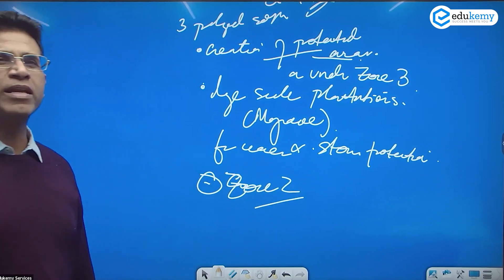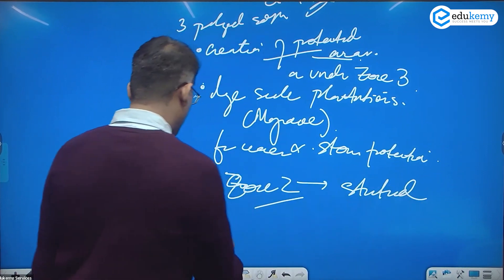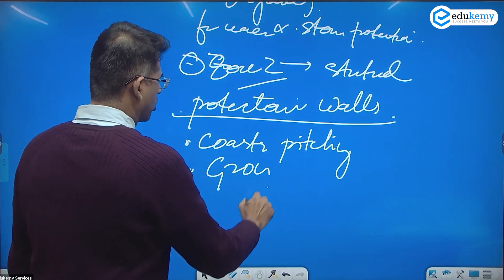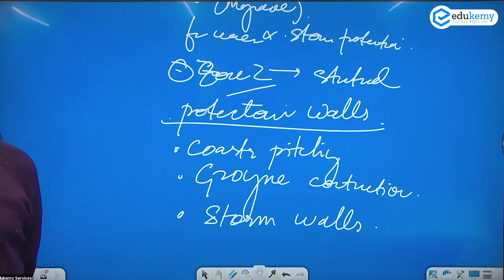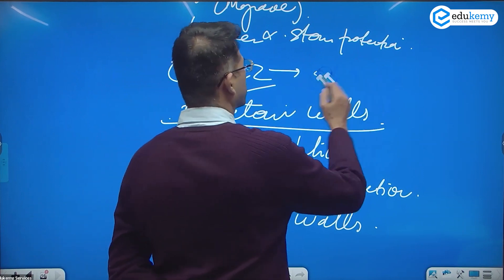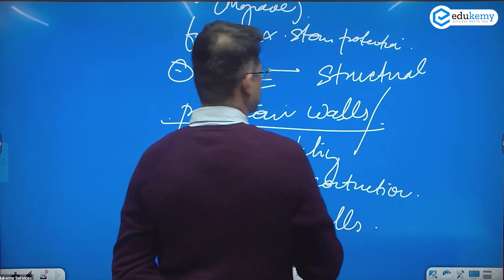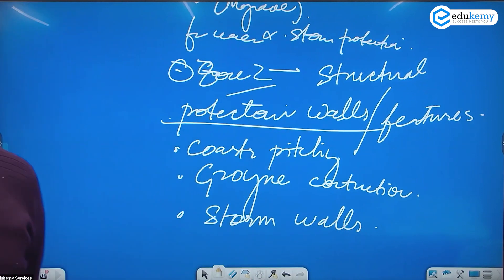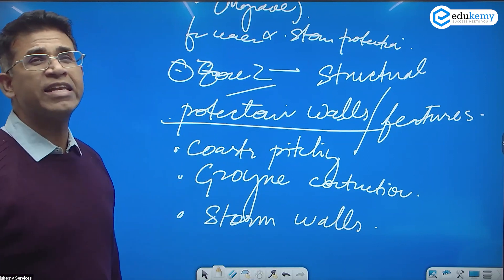And the third is zone two. Zone two which already has urban areas, which already has ports. In zone two, there are structural protection walls such as coast pitching, such as groin construction, such as storm walls.